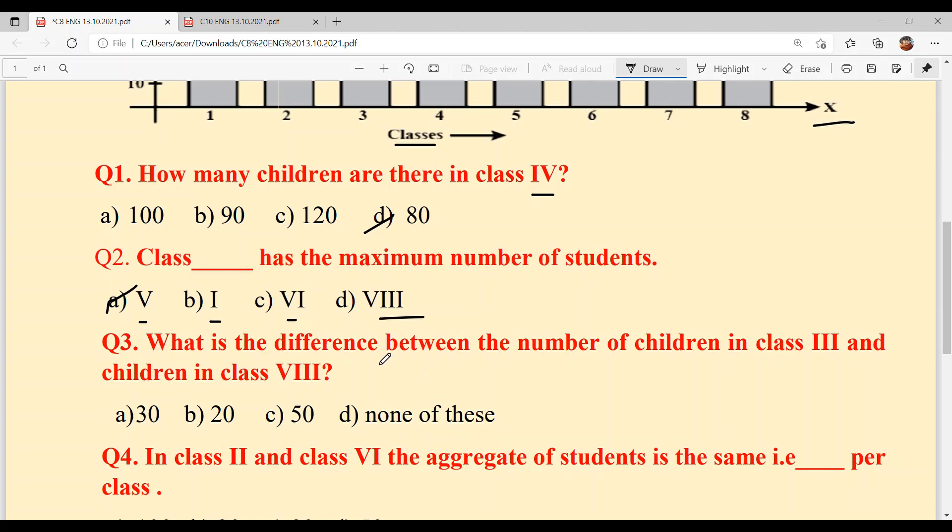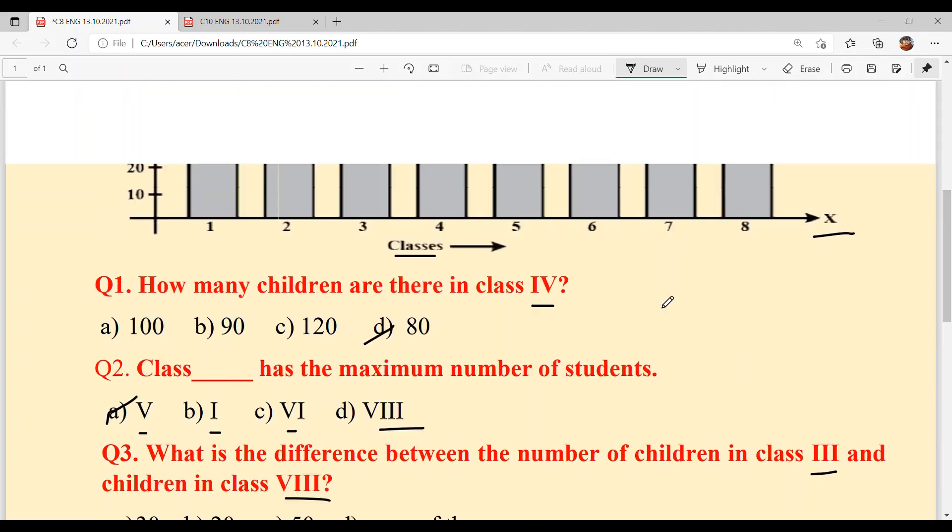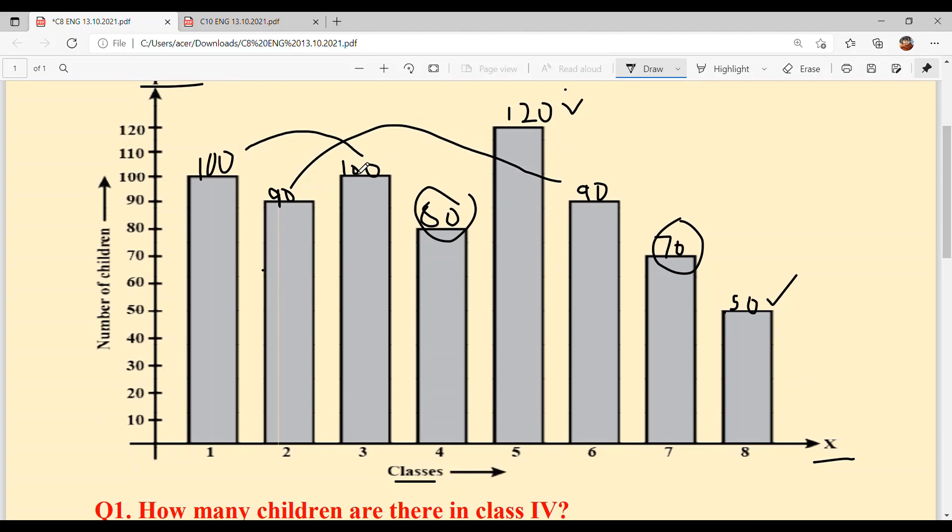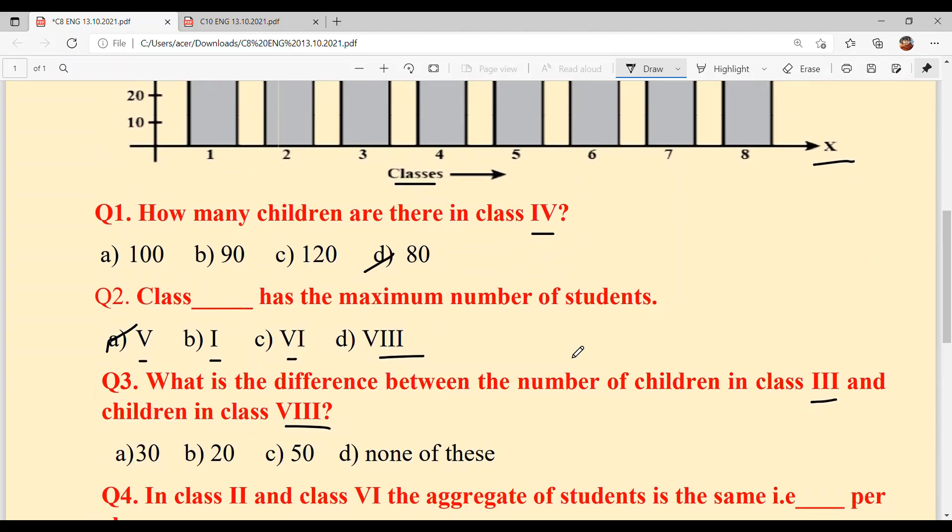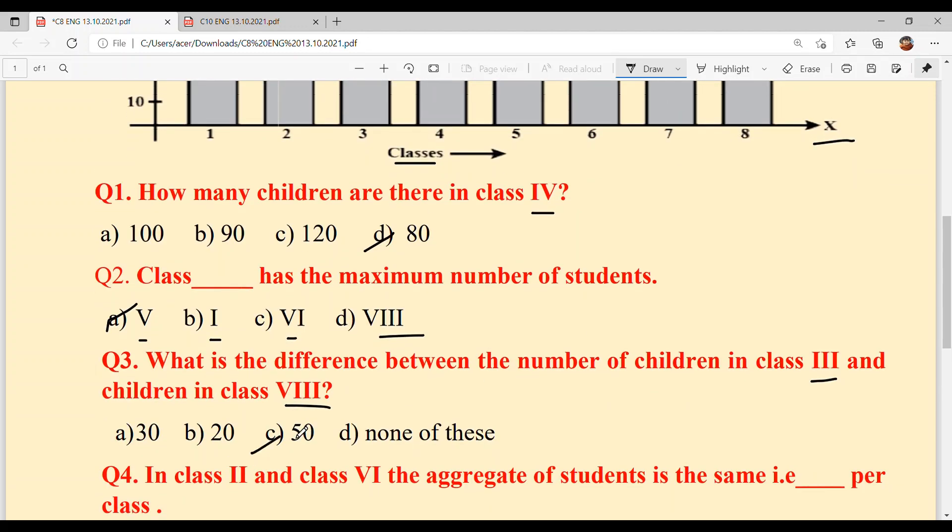What is the difference between the number of children in class third and class eighth? Eight in roman numerals and third in roman numerals. Now eighth has 50, third has 100. 100 minus 50 equals 50. Option C.